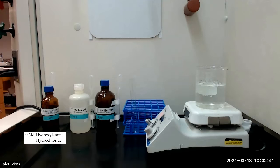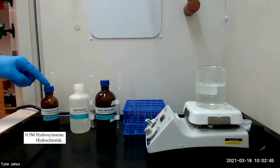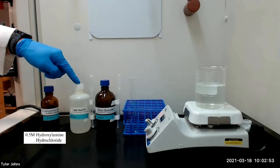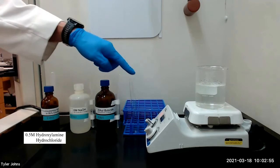We will begin by adding one milliliter of 0.5 molar hydroxylamine hydrochloride dissolved in 95% ethanol and 0.4 milliliters of 6 molar sodium hydroxide to a test tube.